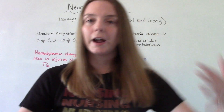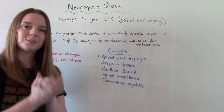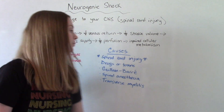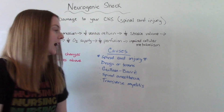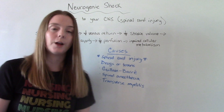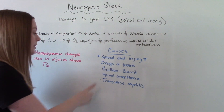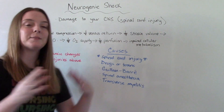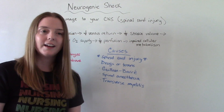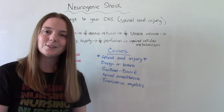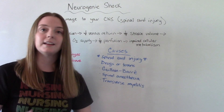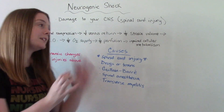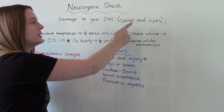When we talk about causes, spinal cord injury is number one — the big one. But it's not exclusive. Other potential causes include certain drugs or toxins that can cause damage to the nervous system, Guillain-Barré, the use of spinal anesthesia — though most people are not going to go into neurogenic shock from spinal anesthesia, it's just a rare potential risk — and also transverse myelitis.